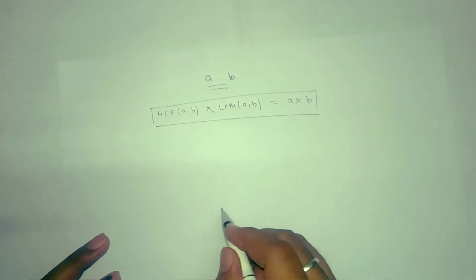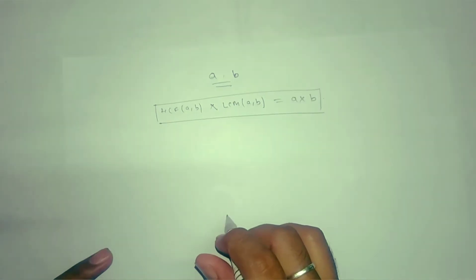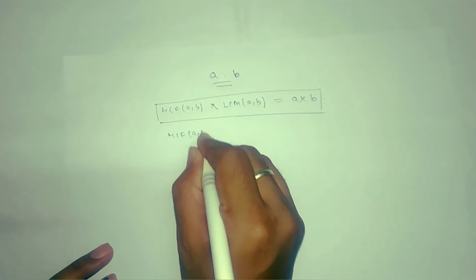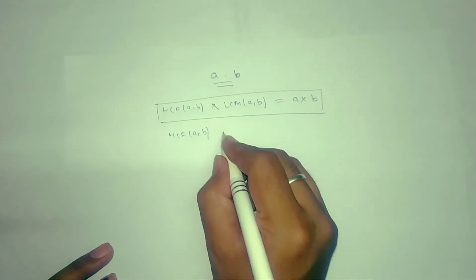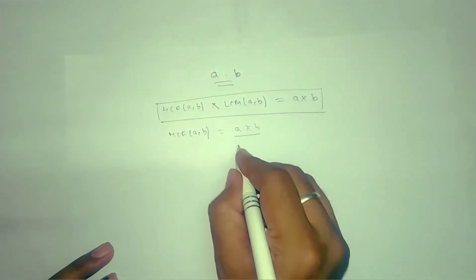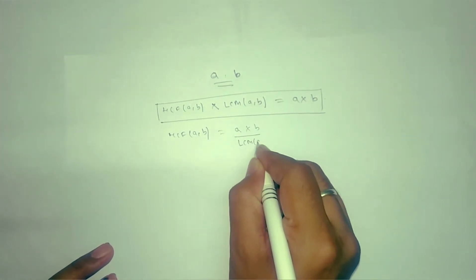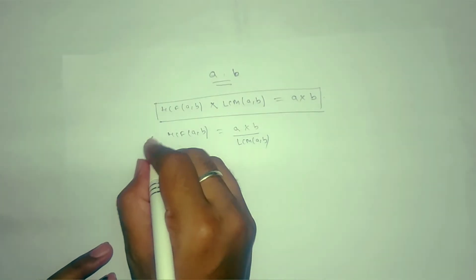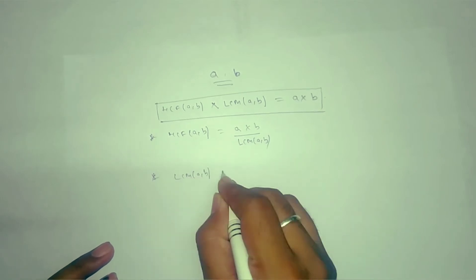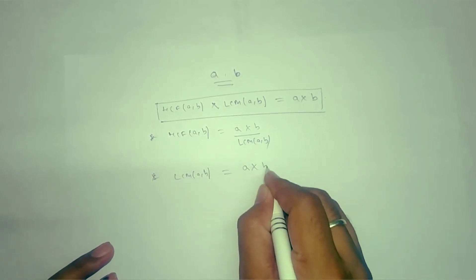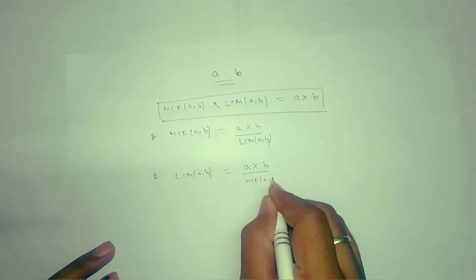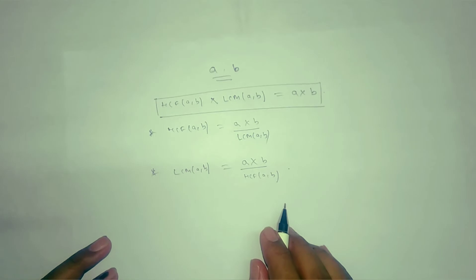From this formula we will get two more formulas. If you need to find HCF, then you can easily find it as a times b divided by LCM of a, b. And if you need to find LCM of a, b, then you can write product of a, b divided by HCF of a, b.